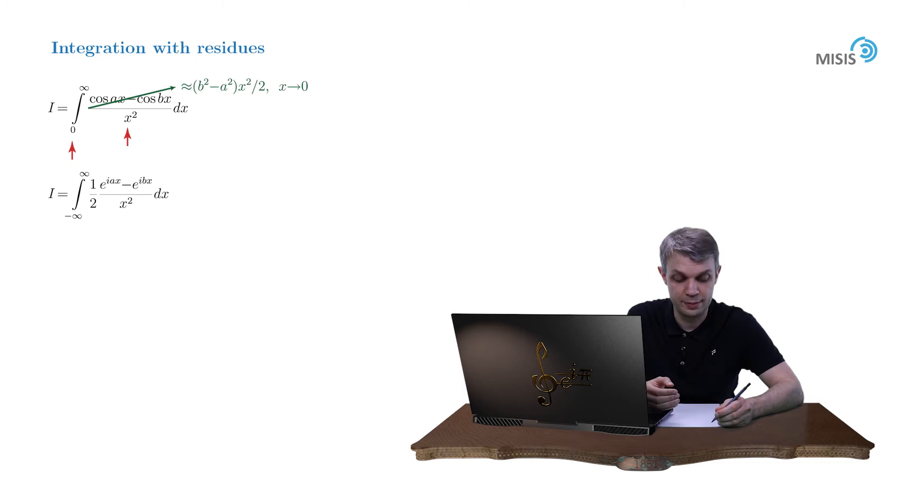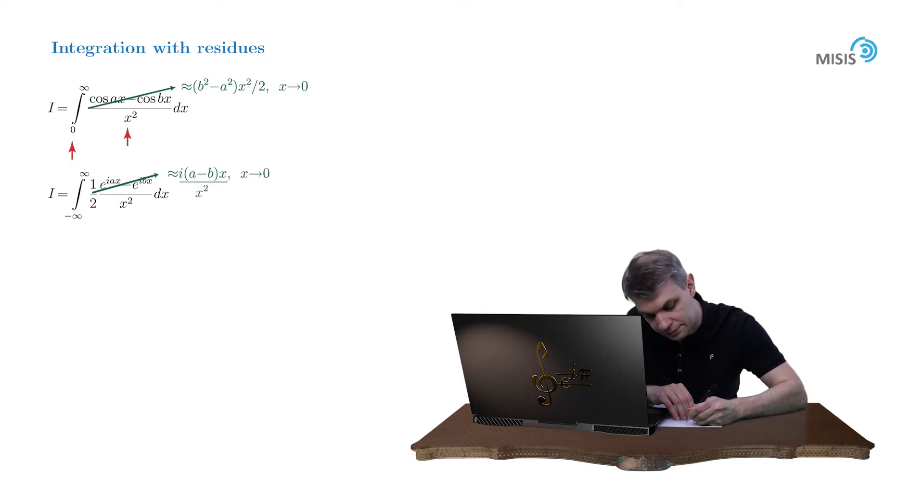It seems everything is fine, but in reality, we already have a problem here. The problem is that our integrand now is singular at the origin. To see this, let us perform the same Taylor expansion at the origin of the numerator. This time, however, we'll obtain ia minus b times x. So, when divided over x squared, we'll obtain 1 over x singularity, the first order pole, right on the integration contour. Of course, the integration contour can't go right through the singularity. It's simply unacceptable in complex analysis.